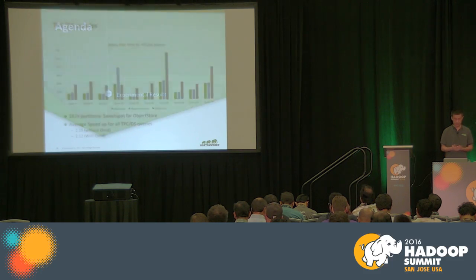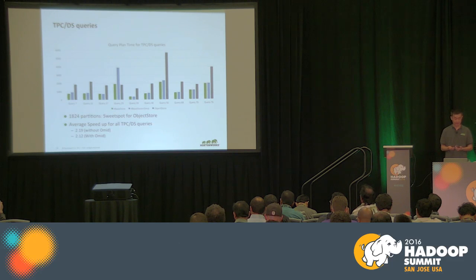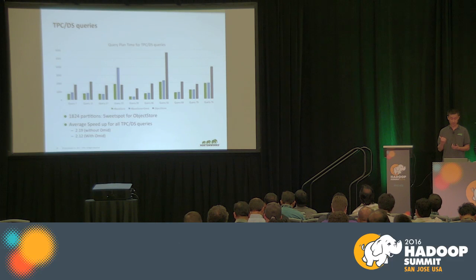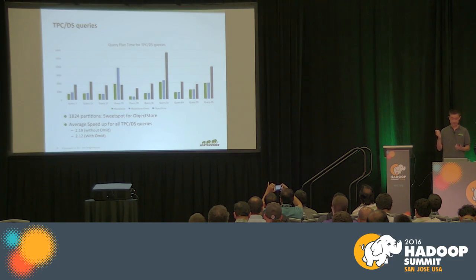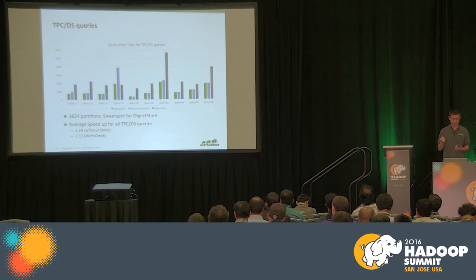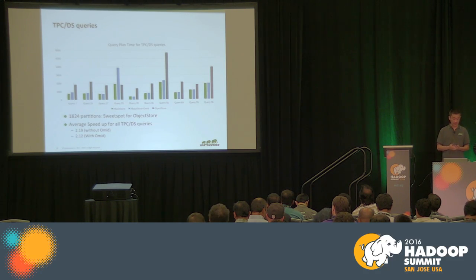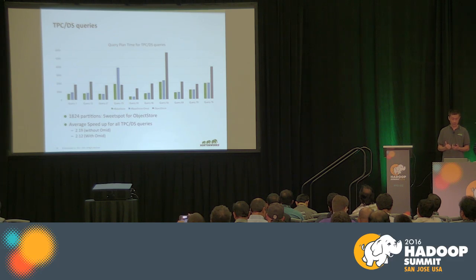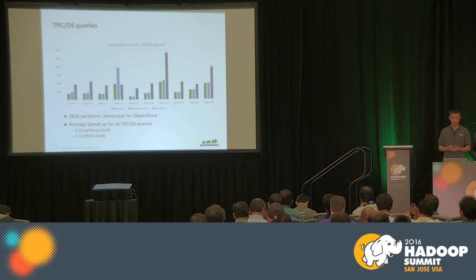Let's look at some experimental results. This diagram shows the query planning time for TPC-DS queries. Note that this is compared against an object store heavily optimized by our performance engineers, with all recent code optimizations applied. For the fact table, it has fewer than 2,000 partitions — well within the sweet spot of RDBMS. Even with this setting, HBase store is still significantly faster than the object store. The average speedup for the HBase Metastore is more than two-fold. Also, the overhead of OMID is very minimal — the runtime is almost the same with and without OMID.